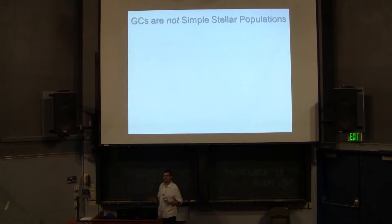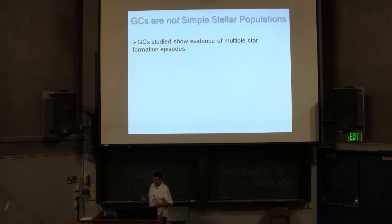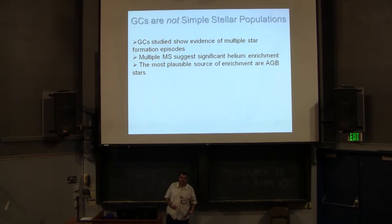The take-home message is that globular clusters are not simple stellar populations. A lot of people have done work trying to figure out what this is. Globular clusters show evidence of multiple star formation episodes — we have multiple main sequences showing different levels of light element enrichment. Many people think the most plausible source of this enrichment are asymptotic giant branch (AGB) stars, which do a lot of light-element nucleosynthesis — turning oxygen into sodium through various channels.